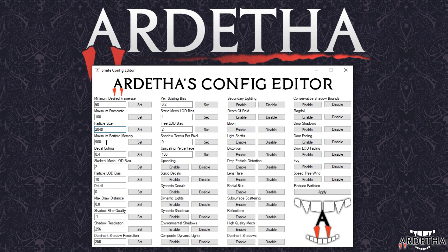With the maximum particle memory, this is again defaulted to something that gives you a higher frame rate. If you want your game to look nicer I would suggest setting that to 2048 as well, because you want more memory dedicated to it so it can keep all of these different particles loaded at the same time. If you want a higher frame rate, set it to the default or something even lower.